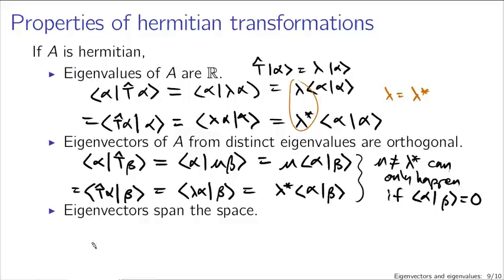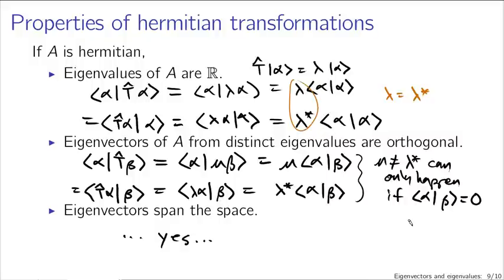The final property is that the eigenvectors span the space. If a transformation has n distinct eigenvalues, you're guaranteed the n eigenvectors span the space. In an n-dimensional space, you get n eigenvalues and therefore n distinct orthogonal vectors — and the only way to have n orthogonal vectors in an n-dimensional space is if they span it. Those are some of the nice properties of Hermitian operators.